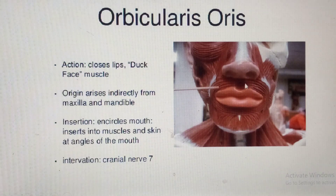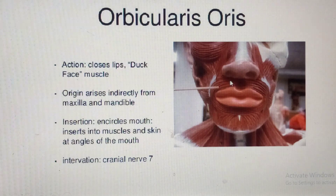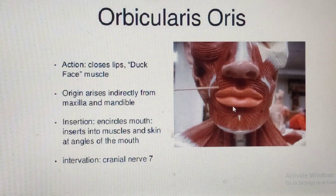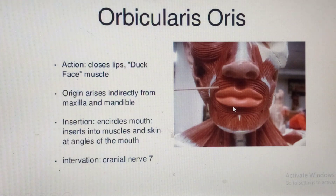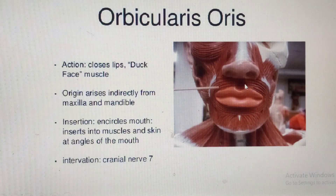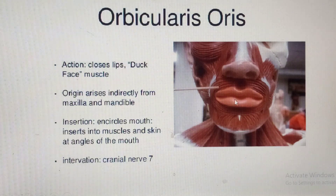One thing to know is that this muscle, by way of origin, originates from the maxilla as well as the mandible — the maxilla is above and the mandible is below. Importantly, because of its role in kissing, we also call this muscle the kissing muscle, because during kissing you have to protrude the lip to kiss your partner.